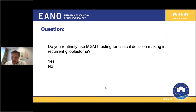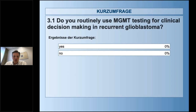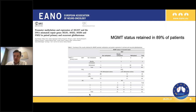I would like to get your opinion from the poll results. The simple question: do you routinely use MGMT testing for clinical decision-making in recurrent glioblastoma? This question is specifically on recurrent glioblastoma and not on newly diagnosed. The result is 100% no. Why is that the case? It's kind of astonishing - in newly diagnosed glioblastoma we use MGMT, at least in elderly patients, with some confidence to guide treatment decisions, but in the recurrent setting we are much less confident.